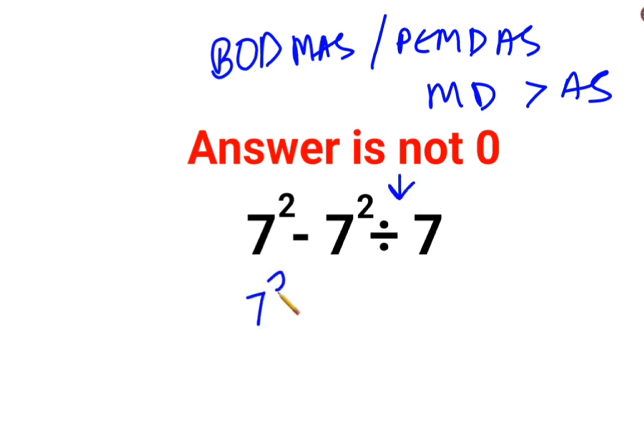So we'll keep the 7 square as it is. Minus 7 square divided by 7, that can be written as what? 49 divided by 7.